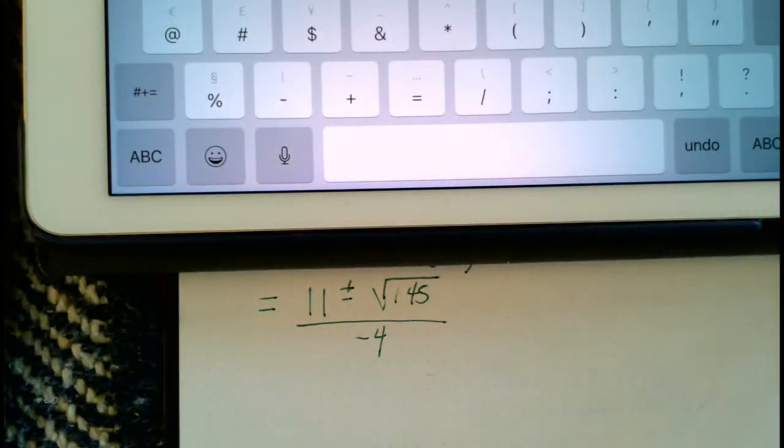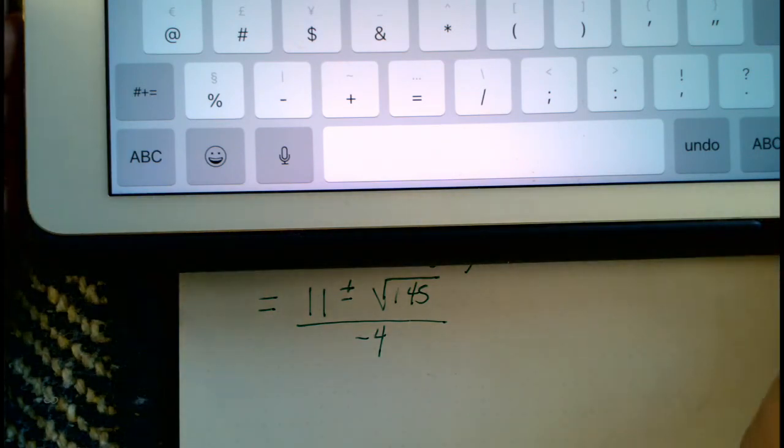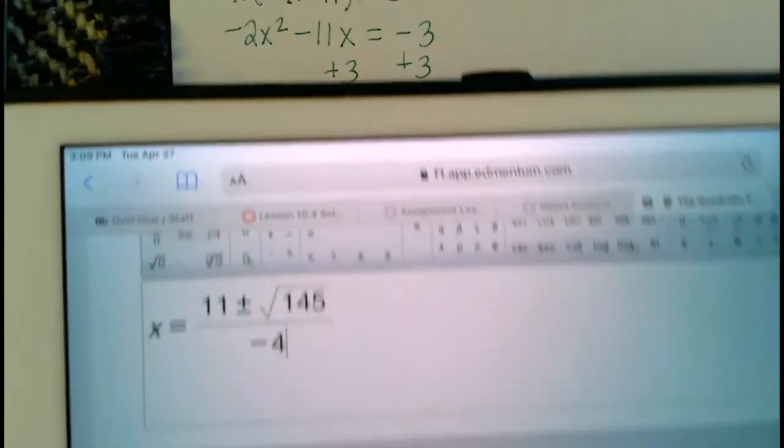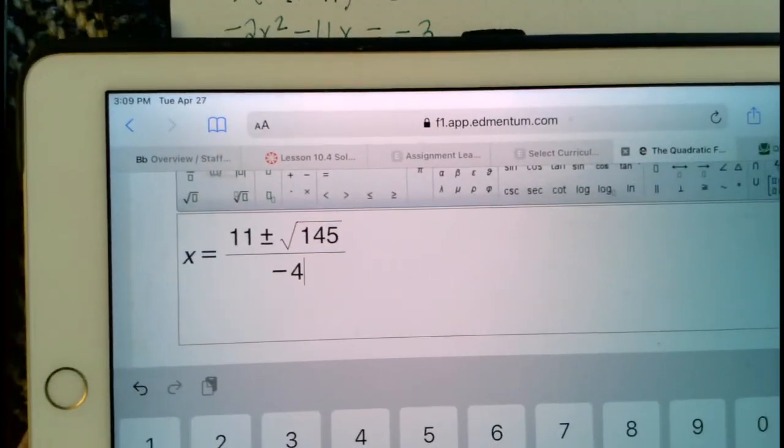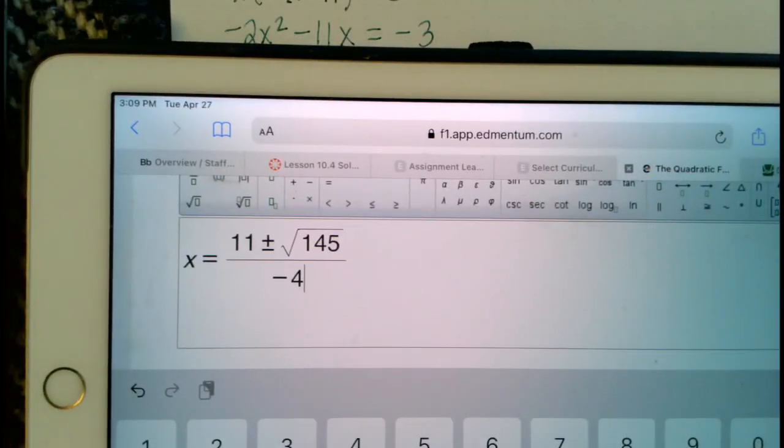And there's our answer. I had it in the wrong way. So I typed in 11 for the m, I typed in the 145 for the n, and I typed in the negative 4 for the p.